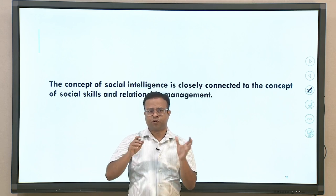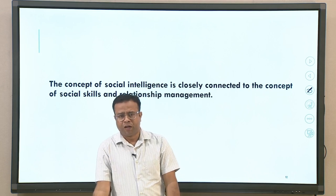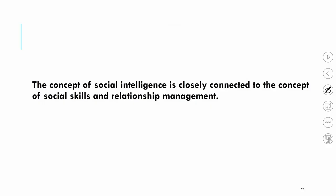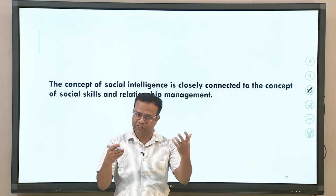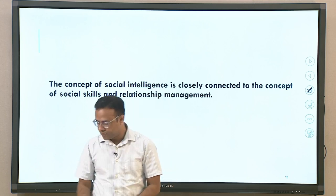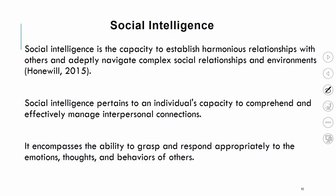Another concept with substantial research is social intelligence, which is connected to social skills and relationship management. Social intelligence is the capacity to establish harmonious relationships with others and adeptly navigate complex social relationships and environments. The concept of intelligence earlier focused only on processing ability and academic intelligence — problem solving, critical analysis, and logical analysis — but later the concept of multiple intelligences came into the picture.